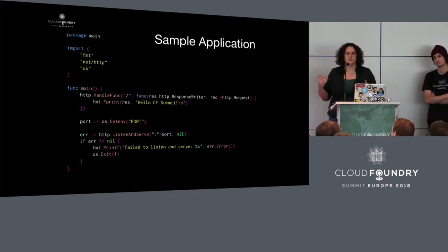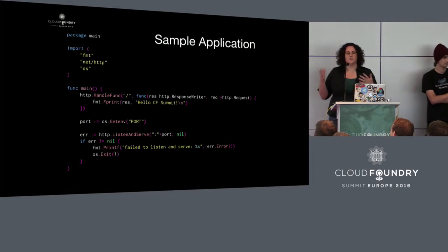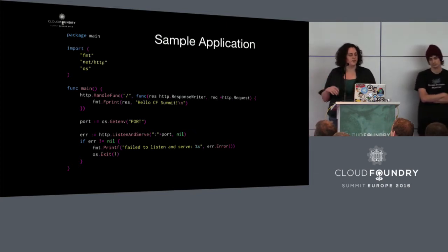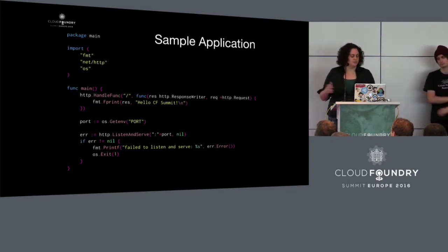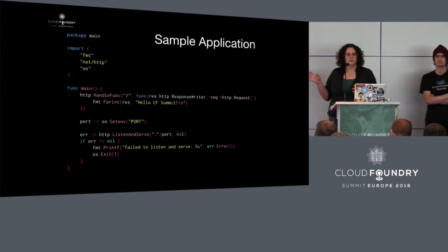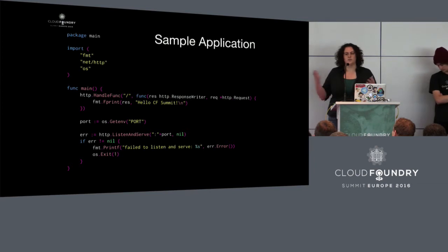Throughout this talk, we're taking one sample application and seeing how it works with both the Buildpack and Docker lifecycle. The simple application is a super simple Golang app. All it does is listen on the port it's been instructed to listen on for incoming HTTP requests and echo back 'hello CF Summit.' Everything we talk about applies to more complicated apps as well.